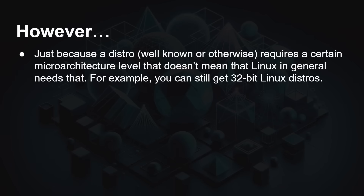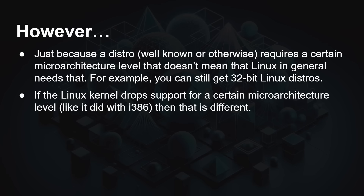I want to underline: just because a distro — well-known or otherwise — requires a certain microarchitecture level, it doesn't mean that Linux itself needs it. You can still get 32-bit Linux distributions today. Linux didn't drop it — just that particular distro, whether Ubuntu or whatever. You can always find a version of a Linux distribution that suits your particular hardware. It's about what the leading-edge and most popular distros are doing. If the Linux kernel drops support for a certain microarchitecture level, like it did with the 386, that would be different — but we're not at that stage. We're talking about what the distros are doing, not the Linux kernel itself.